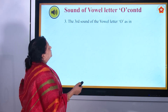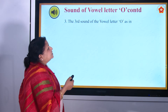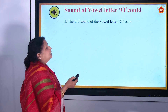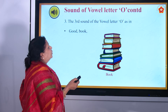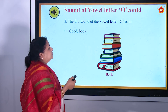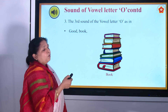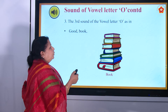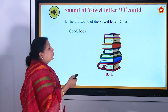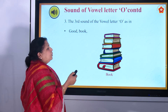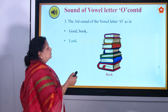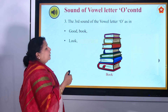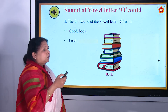The third sound of the vowel letter O is as in 'good' — G, O, O, D — good. The sound is 'oo'. Then 'book' — B, O, O, K — book. Then 'look' — L, O, O, K — look.